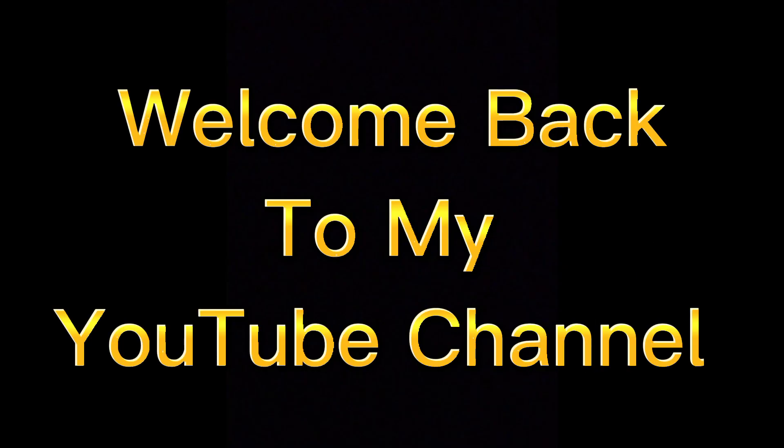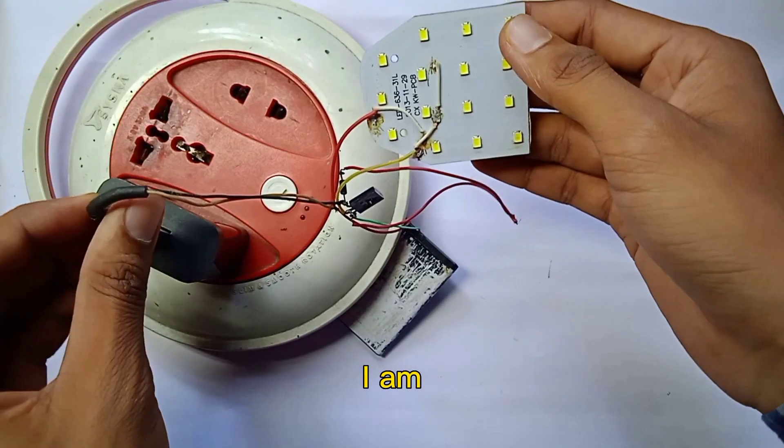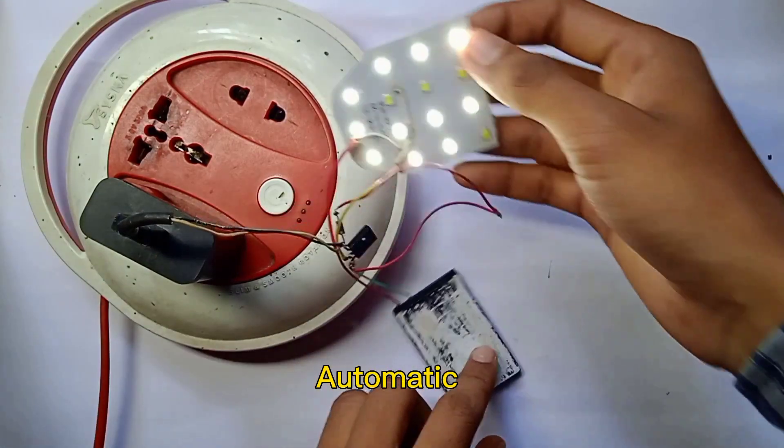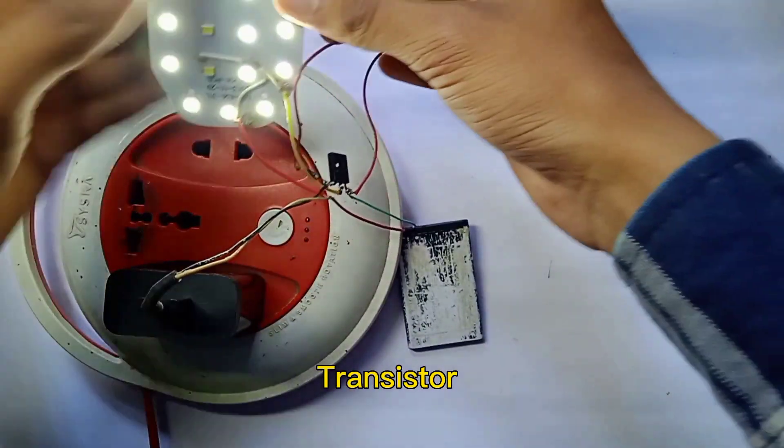Hi guys, welcome back to my YouTube channel. Today I'm going to show you how to make an automatic on-off light using a 420BD transistor.